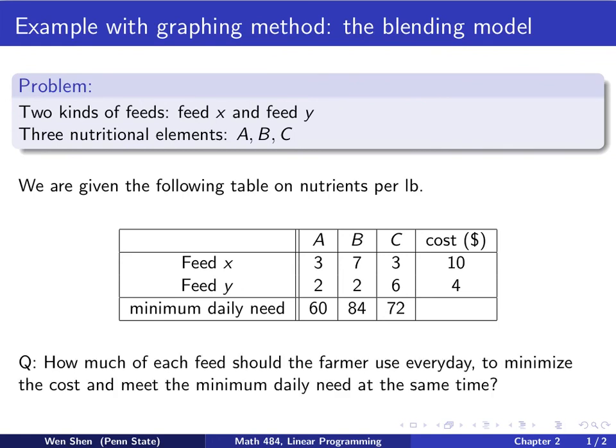So the question is, how much of each feed should you, the farmer, use on a daily basis so that you minimize the total cost of buying them and you also meet the minimum daily need of the nutrients.